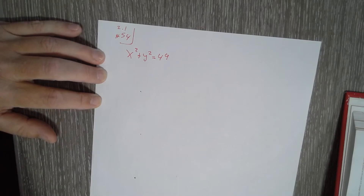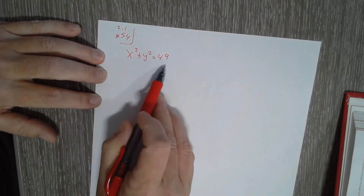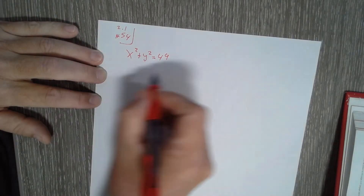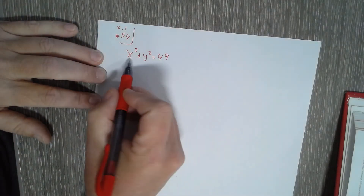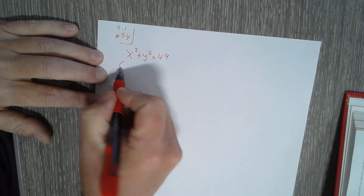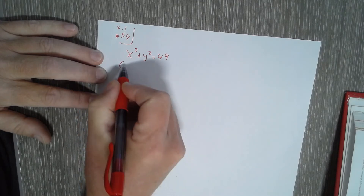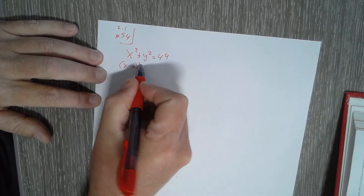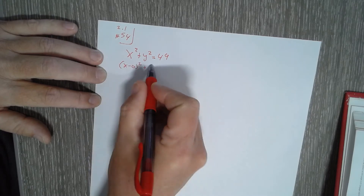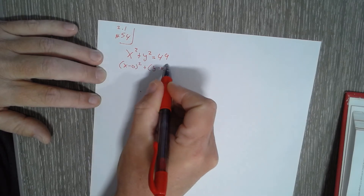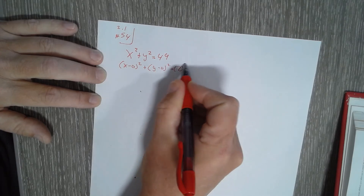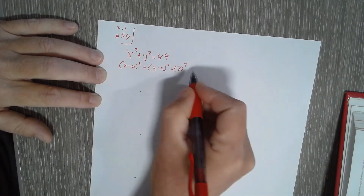Number 54 just wants us to find the center and the radius. They give us this equation, and we just have to recognize that it's in standard form. The x squared is the same as (x minus 0) squared, the y squared is the same as (y minus 0) squared, and 49 is the same as 7 squared.